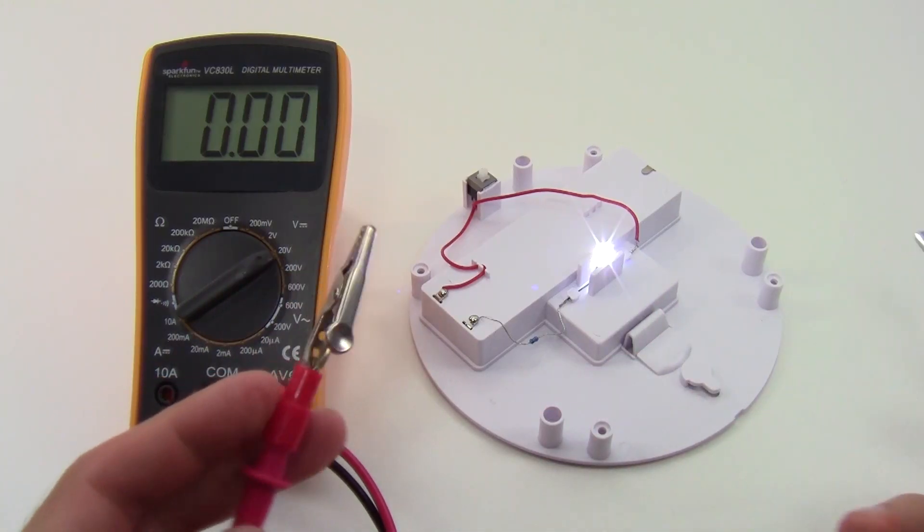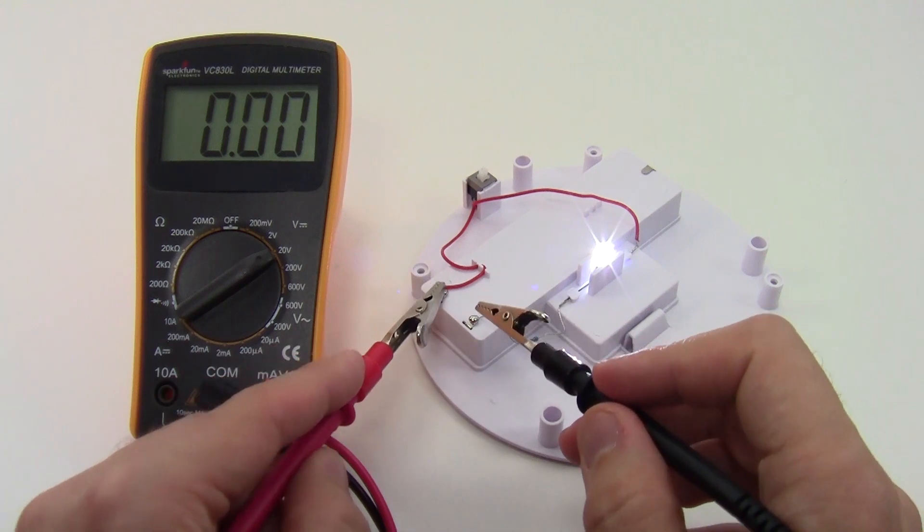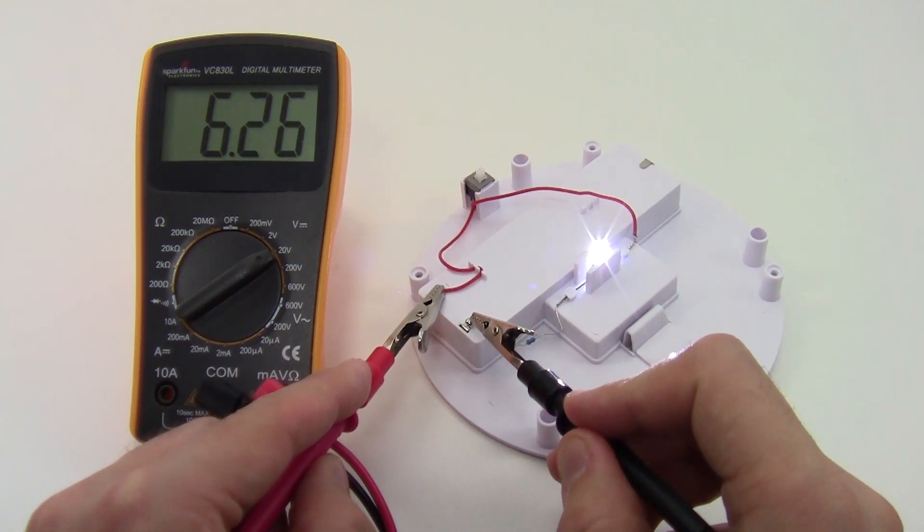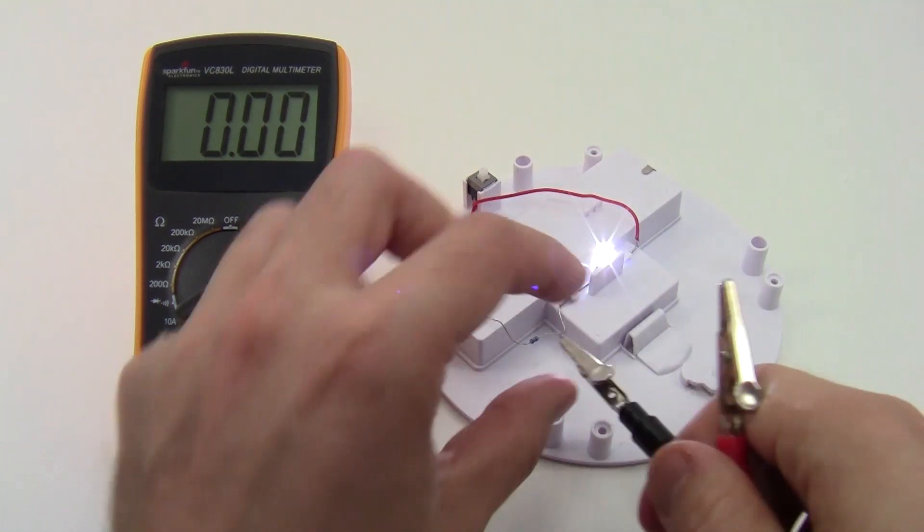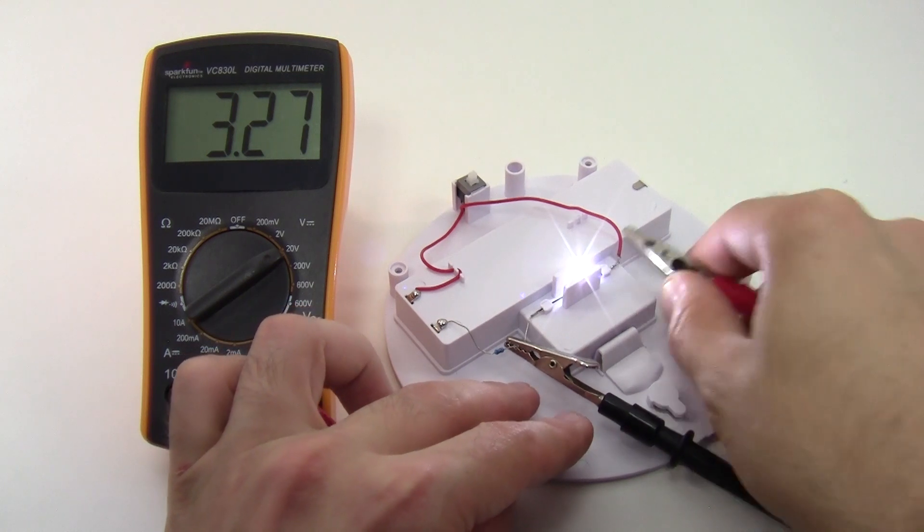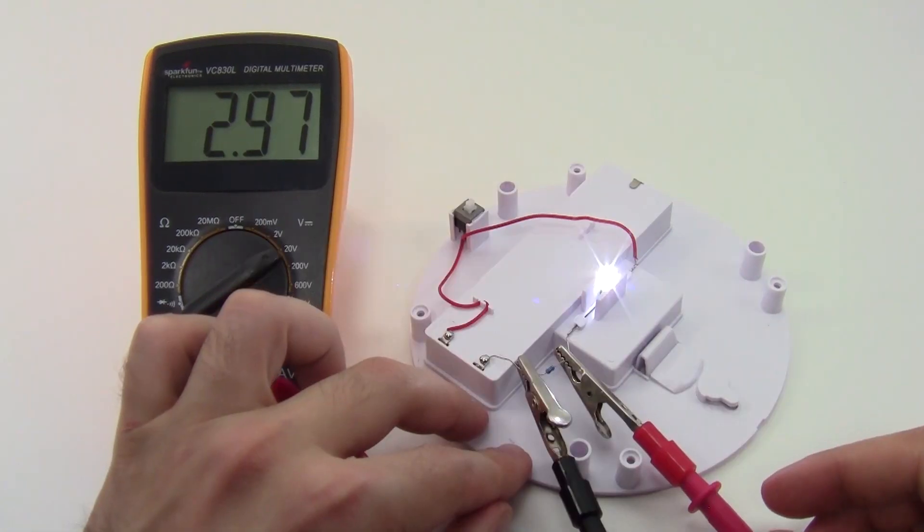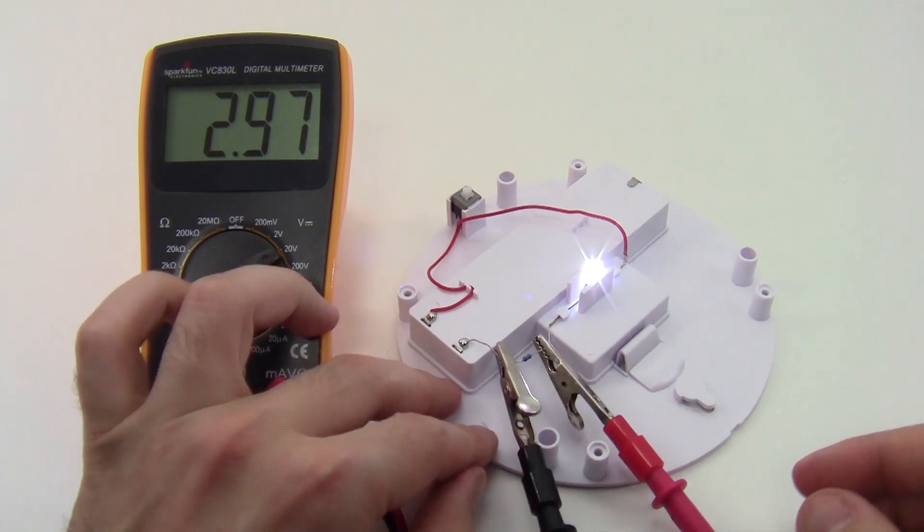Now, let's use a multimeter to analyze the voltages in this circuit. I can see that my battery pack supplies a voltage of just over 6 volts. I have a voltage drop of just over 3 volts over my LED, and a voltage drop of just under 3 volts over the resistor.